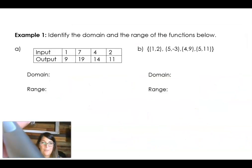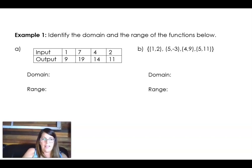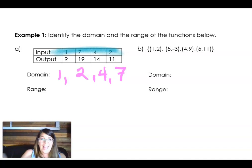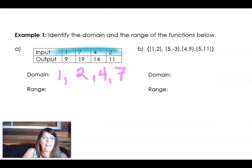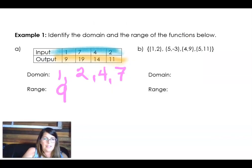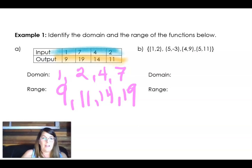Now let's practice the domain and the range. So here you have a table. You have the input one, seven, four, and two. So the domain are all of these values. But I have to list them in order. So one, two, four, and seven. And the range is the set of the y values. So those are the ones down here. So again, I got to list them in order. So nine, eleven, fourteen, and nineteen. It's really messy. Sorry about that.